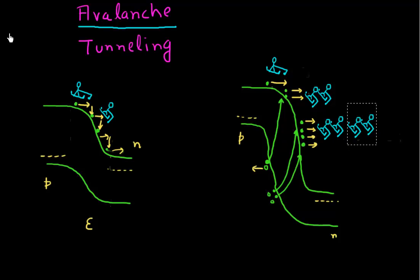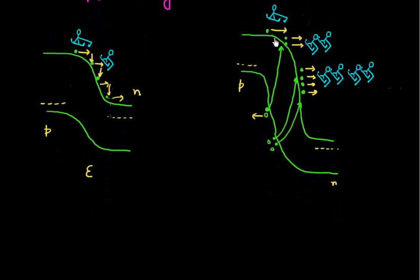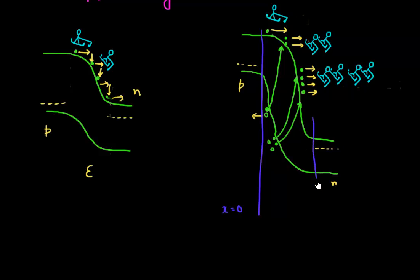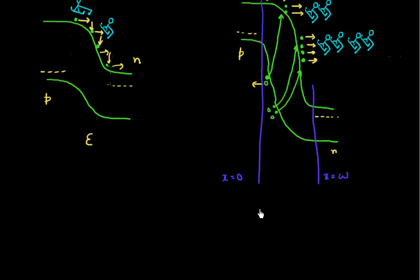Coming back to electrons and holes: what's happening in terms of electrons and holes is that my electrons are going down the hill and they're generating more electrons by this impact ionization phenomena. Let me draw my depletion region. This is the start of my depletion region, which I label at x equal to 0, and this is the end of my depletion region, which I label at x equal to w.